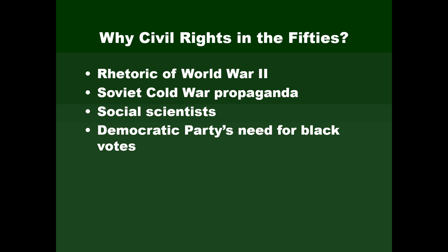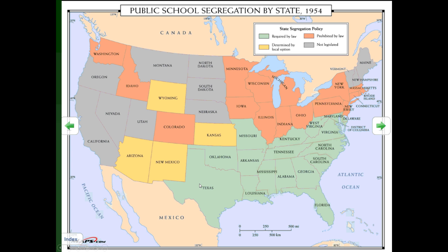Also, the Democratic Party in the North had a great need for Black support. The Democratic Party in the South was bitterly opposed to the civil rights movement, but northern Democrats began to have a political motive for supporting it. This is a survey of the laws affecting school segregation in the various regions of the country.